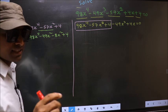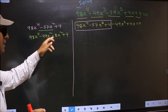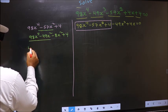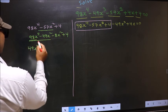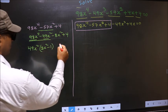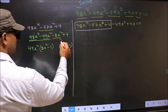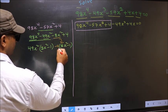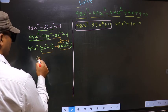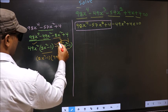I'm directly splitting minus 57 into minus 49 and minus 8. From the first two terms, 49x² can be taken out common, giving 2x² minus 1. From the next two terms, 2x² goes inside so outside you get minus 4, giving the same bracket 2x² minus 1. Now take out 2x² minus 1 as common, leaving 49x² and minus 4.